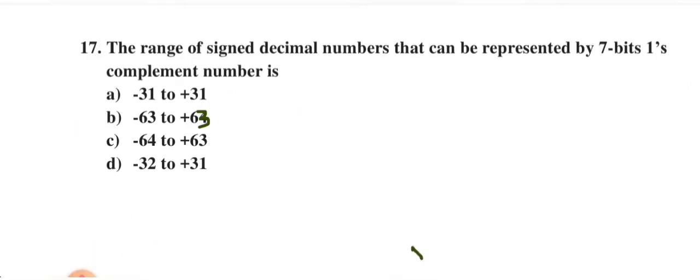Range of signed decimal numbers representable by 7-bit 1's complement. General formula for n bits: 1's complement range is −(2^(n−1) − 1) to +(2^(n−1) − 1).